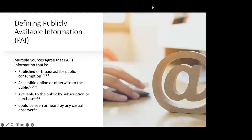So first we'll dive into what is the core of open source intelligence and its publicly available information, which is often abbreviated as PAI. We've got citations throughout the presentation and there will be a reference slide at the end. If you'd like copies of the slides, feel free to let me know and reach out. I'll have my contact information up for you as well.